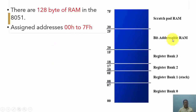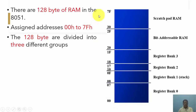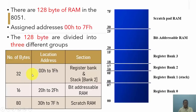In this video lecture, we are going to see how this 128 byte RAM is distributed in the 8051 microcontroller. The addresses are distributed as per the name given to each group. This 128 byte RAM available in the 8051 microcontroller is mainly divided into three different groups. The entire locations from 00H to 7FH, that is 128 byte locations, are divided into these three groups.